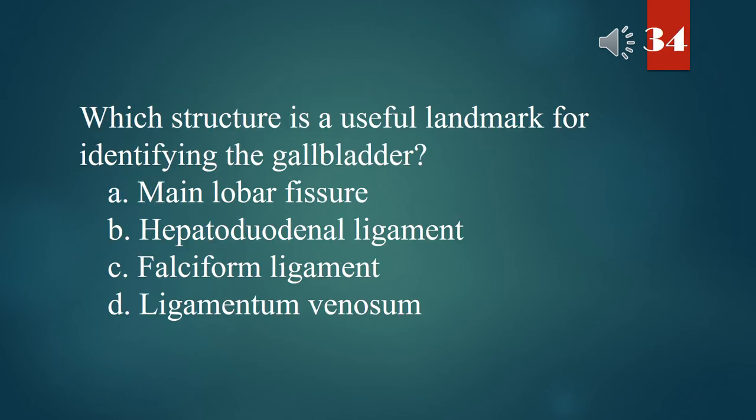Which structure is a useful landmark for identifying the gallbladder? A. Main lobar fissure. B. Hepatoduodenal ligament. C. Falciform ligament. D. Ligamentum venosum. The answer is A. Main lobar fissure.